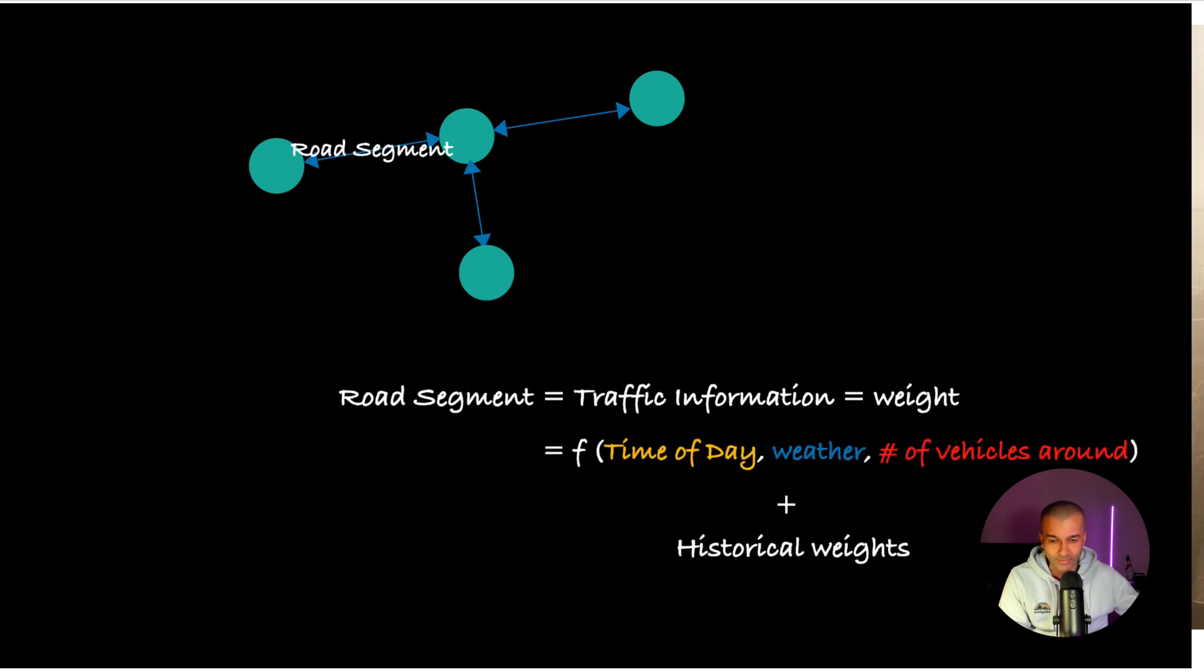This is a function of the time of day, the weather, the number of vehicles around, and some more variables that the article doesn't mention. It also takes the historical weights into consideration to calculate the current weight, and this weight represents the time that it would take to go from one node to the other on that edge.